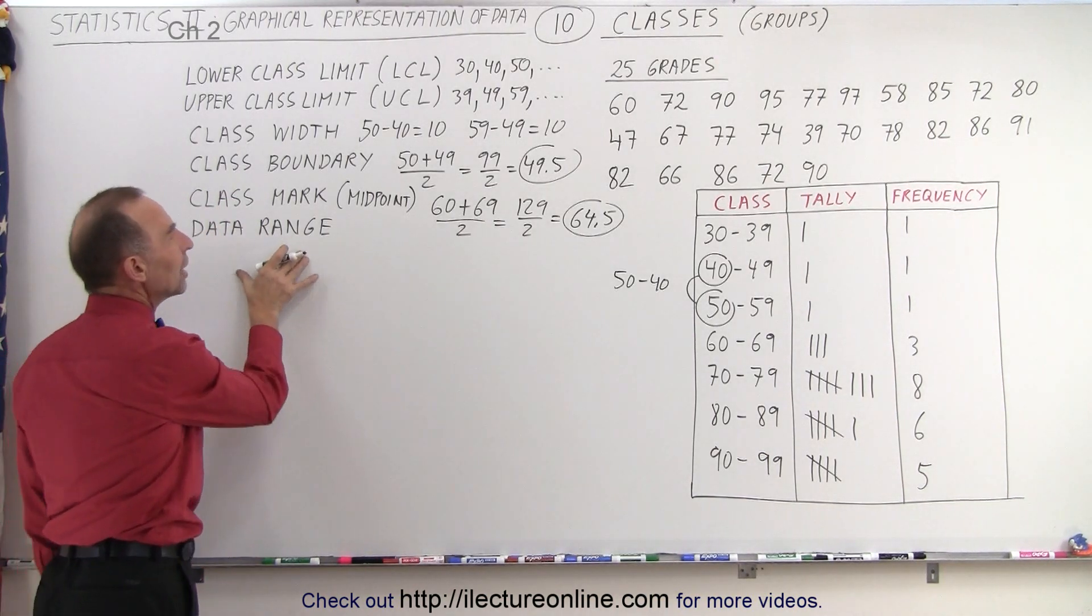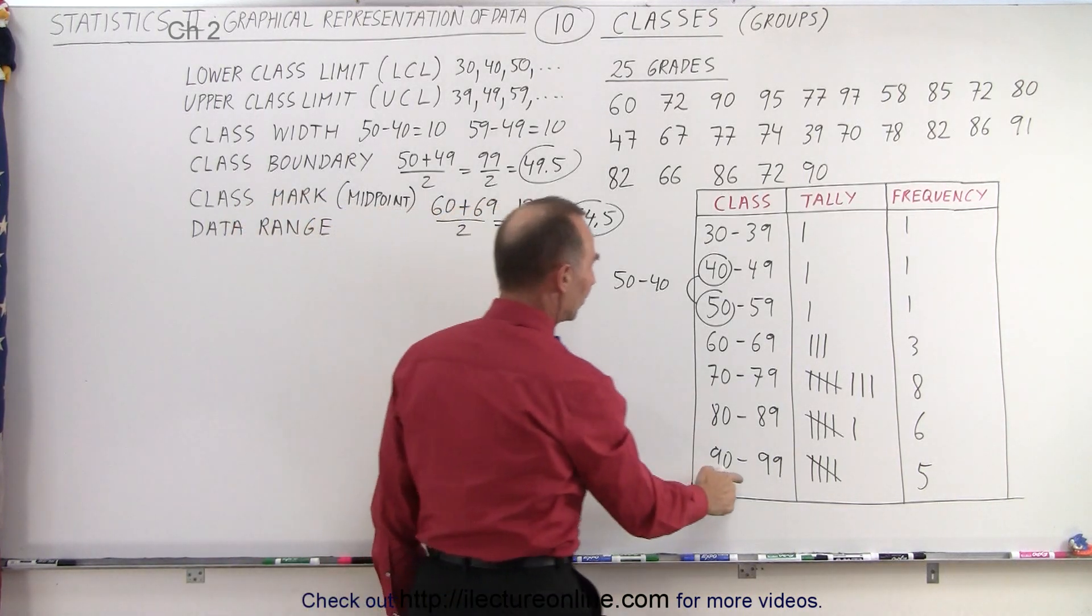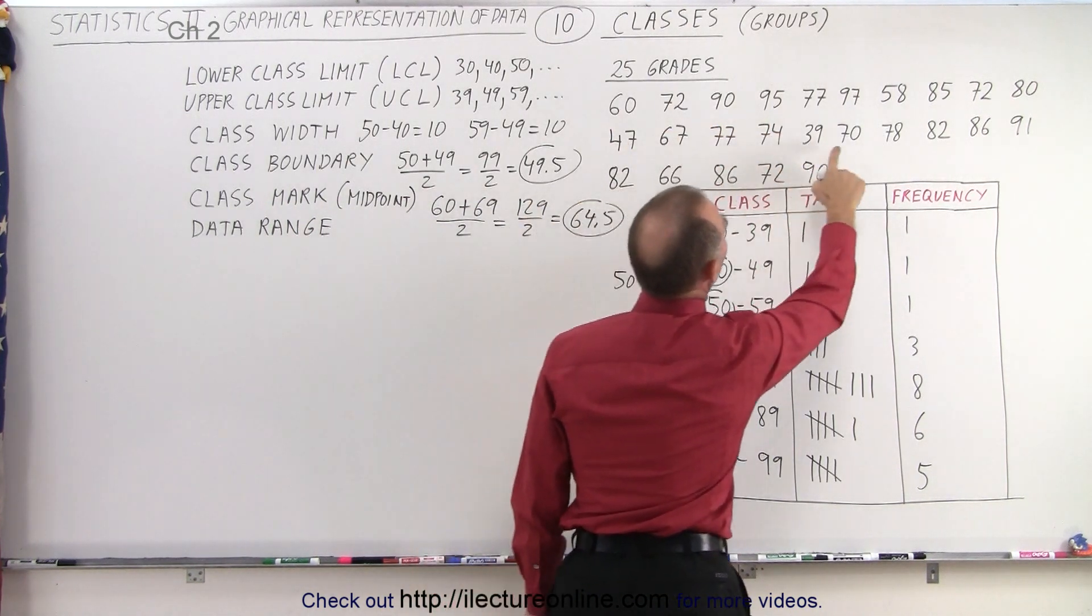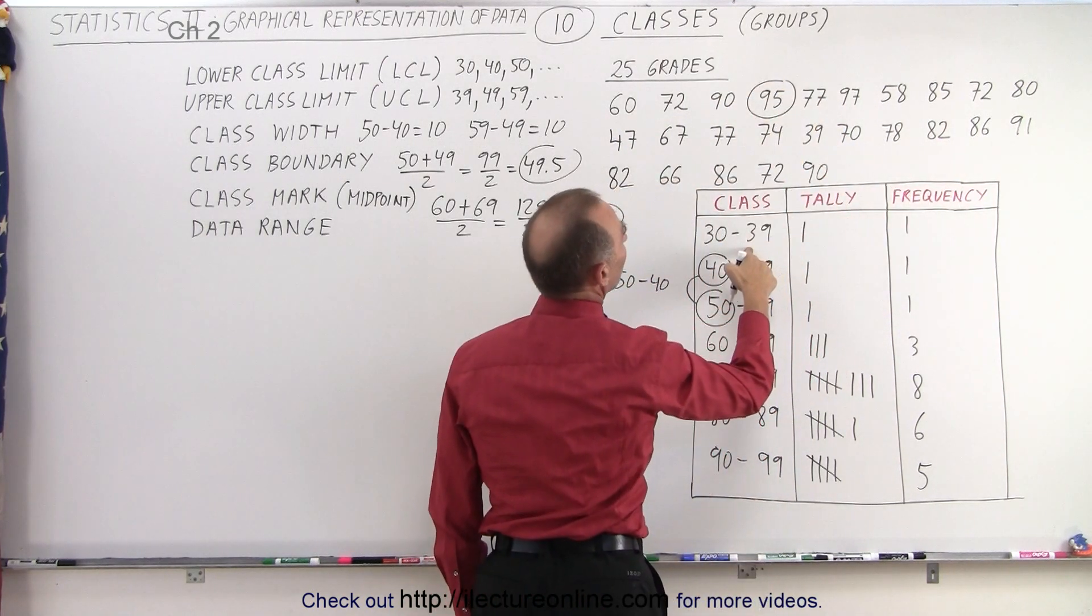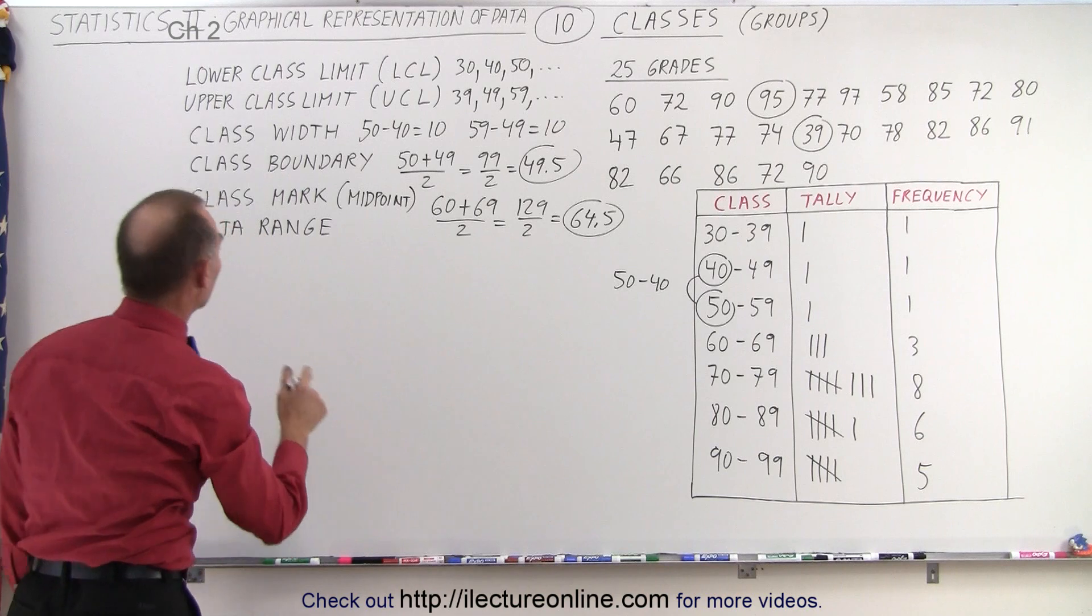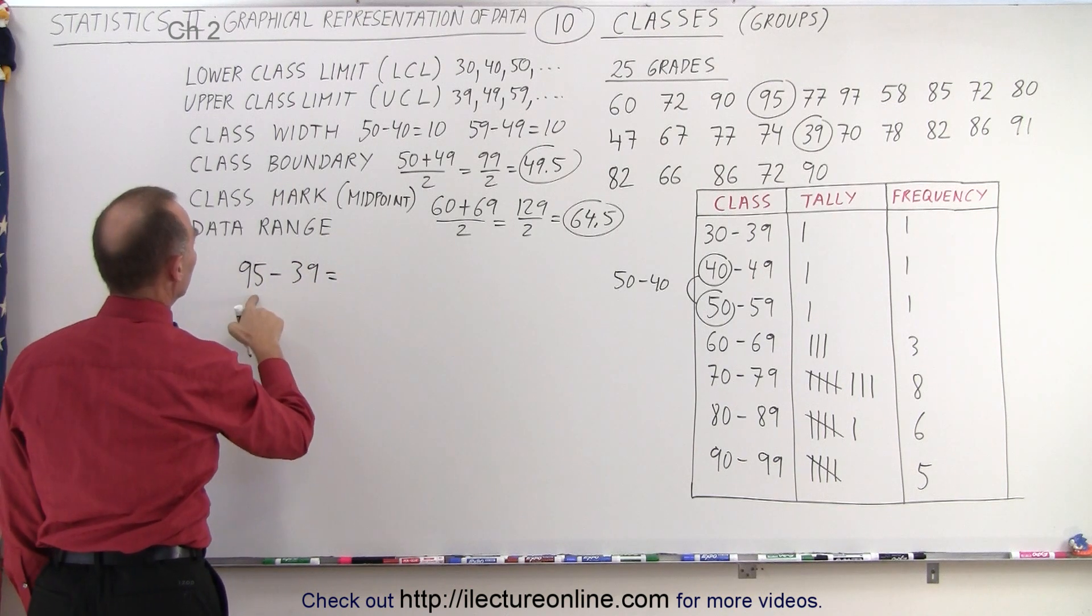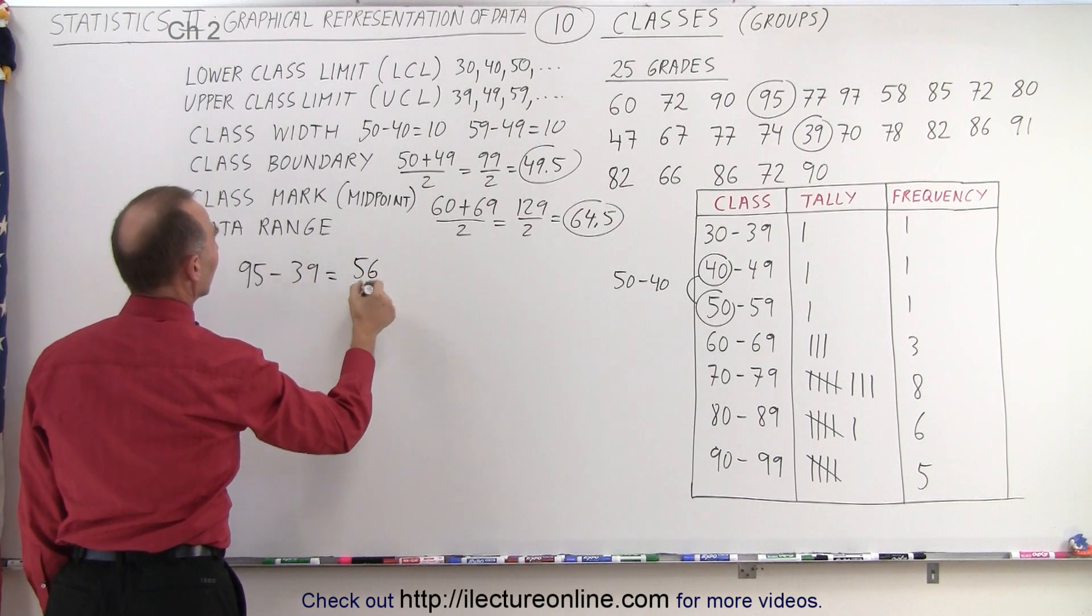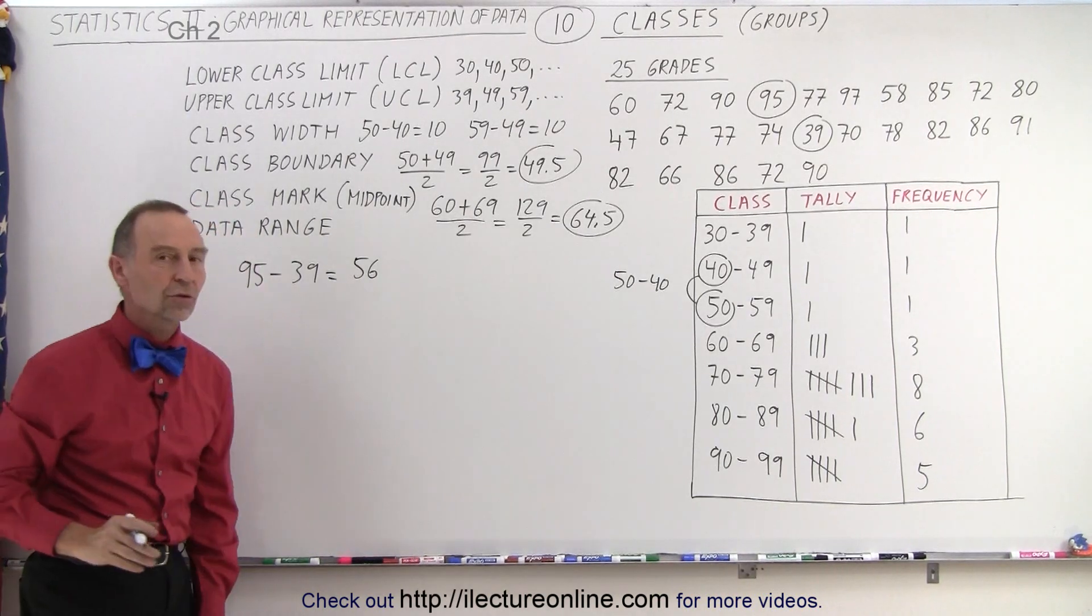And finally the data range is the difference between the highest and the lowest data point. So the highest data point would be, let's see here, that would be 95. Yes, it looks like 95 is the highest one and the lowest one would be 39. And so in this case for those 20, 25 data points, the data range would be simply 95 minus 39 which equals that would be 56. Yes, so that would be the data range, the difference between the highest and the lowest number in your data set.